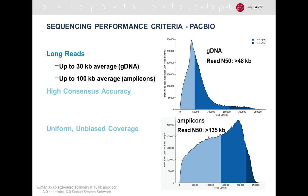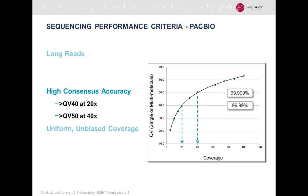The read N50 — the read length which harbors more than half of the data — is greater than 48 kilobases for genomic DNA. For amplicons, the read N50 is even longer: more than 135 kilobases. Regarding high consensus accuracy, errors are random, so you reach consensus quickly. With this new chemistry, the raw read error is reduced. At 20-fold coverage, you reach Q40 or 99.99%, and at around 40-fold coverage you reach Q50 or 99.999% — less than one error in 100,000 sequence bases.